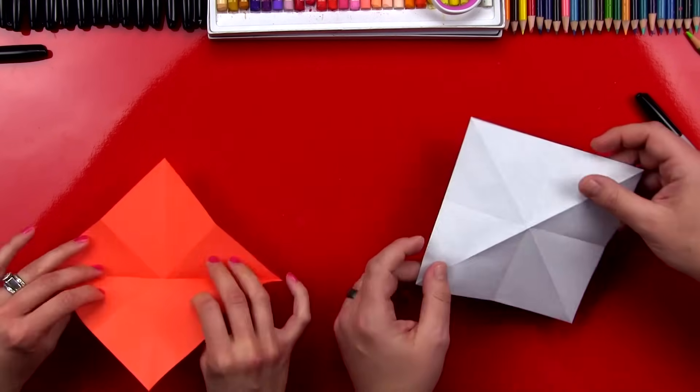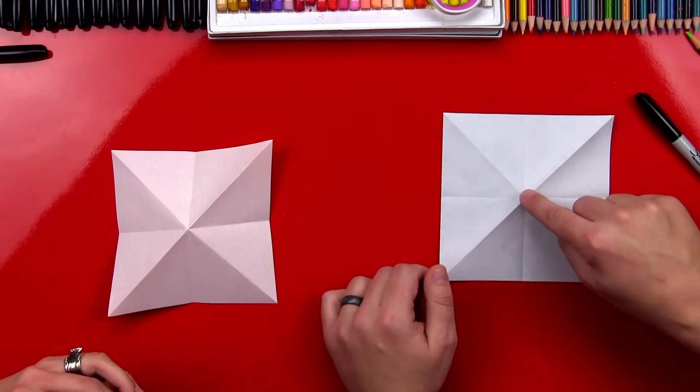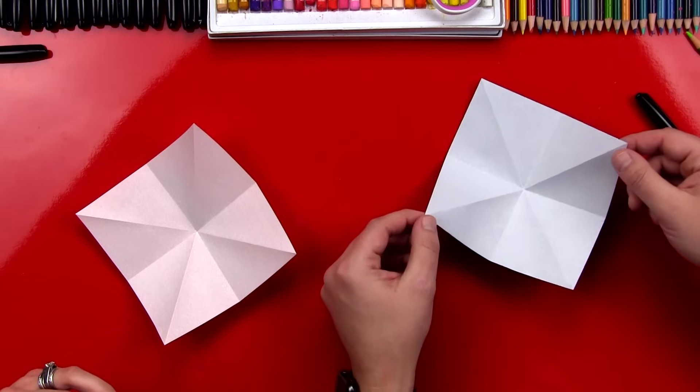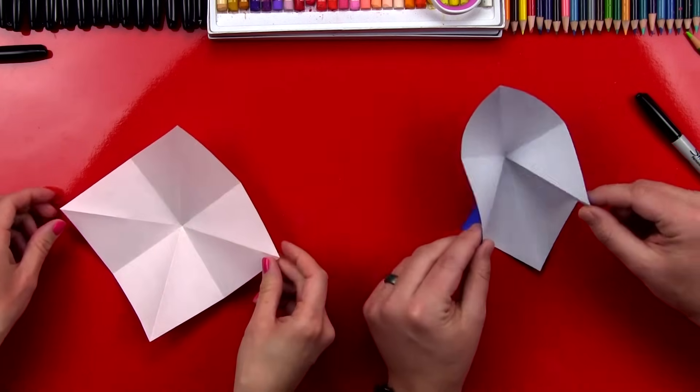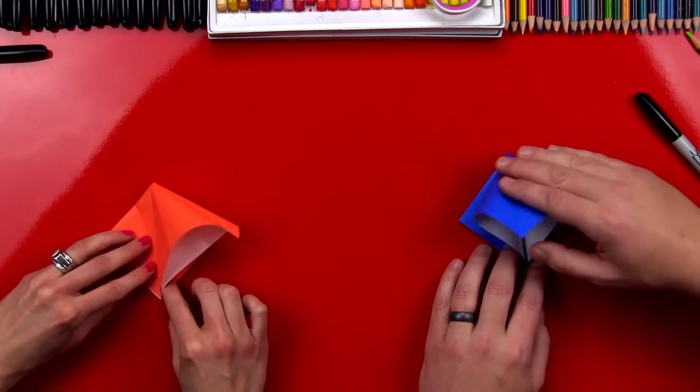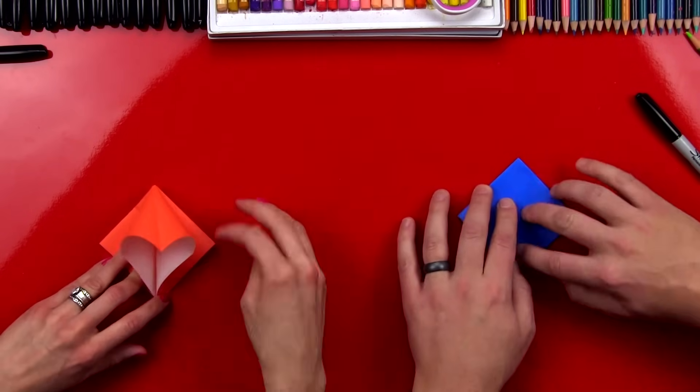Alright. Okay, now we can open it up. And then right here in the middle, you can press down so that it flips the other way. There you go. And then we're gonna take these two corners and we're gonna fold them down to the middle. And then we can take this top flap and squish it down. There you go. You're doing great, wife.